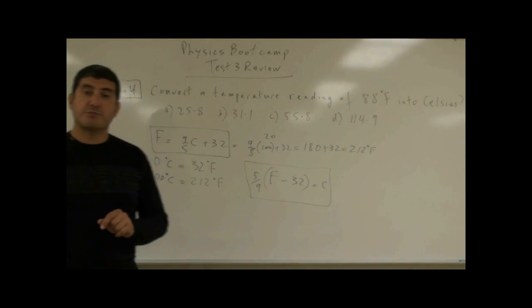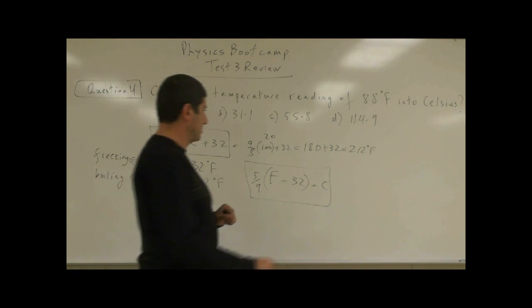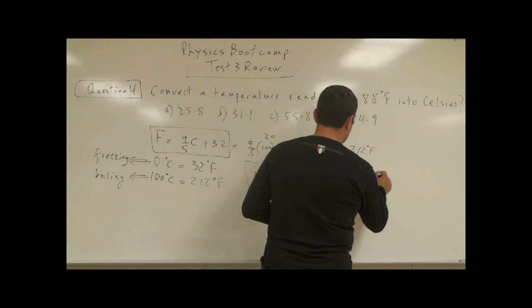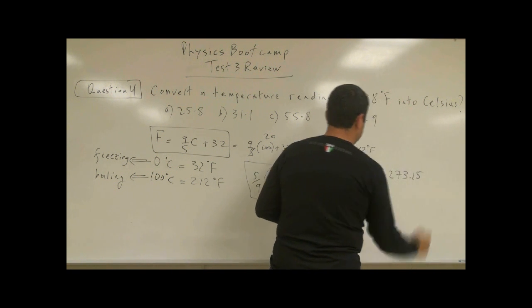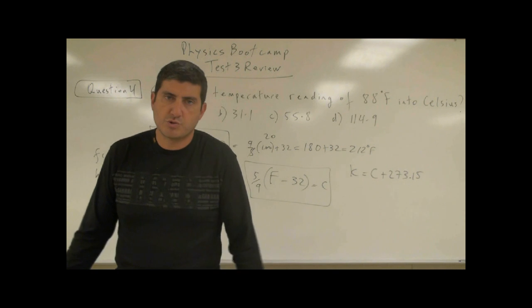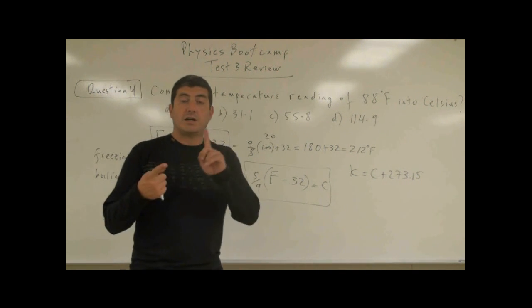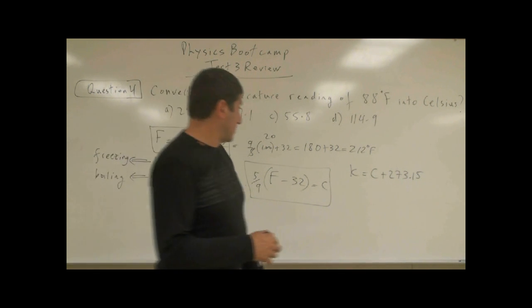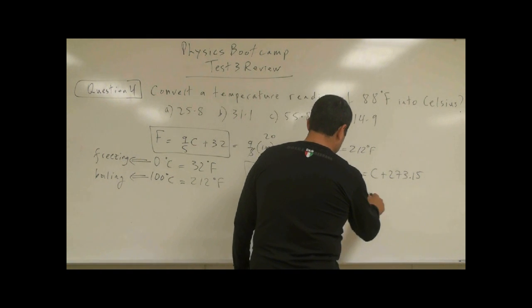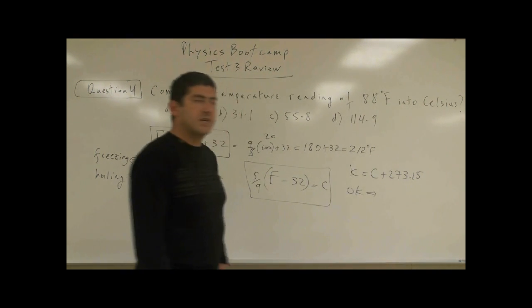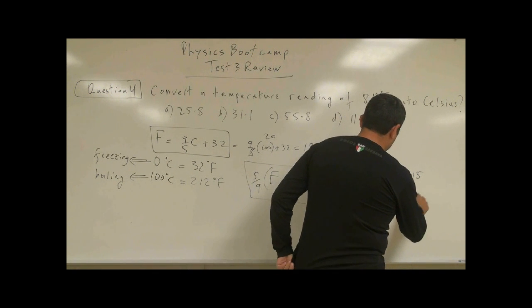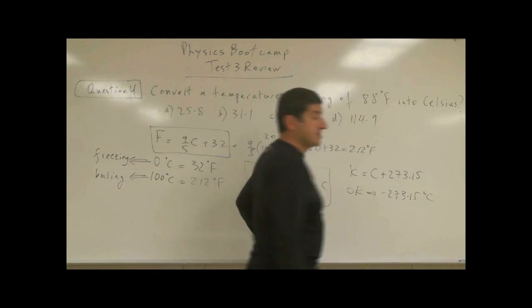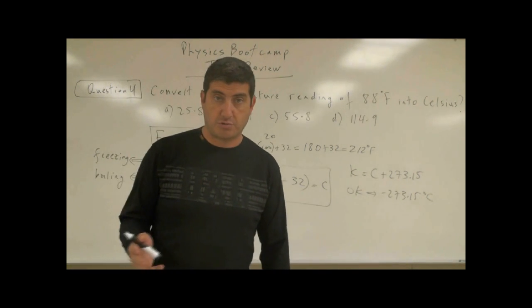What's the conversion between Kelvin and Celsius? Well, Kelvin is equal to Celsius plus 273.15. Sometimes we just write 273, sometimes we write 273.15. Now, zero degree Kelvin, zero Kelvin corresponds to negative 273.15 Celsius, and this is the coldest temperature that you can imagine. It's called absolute zero.